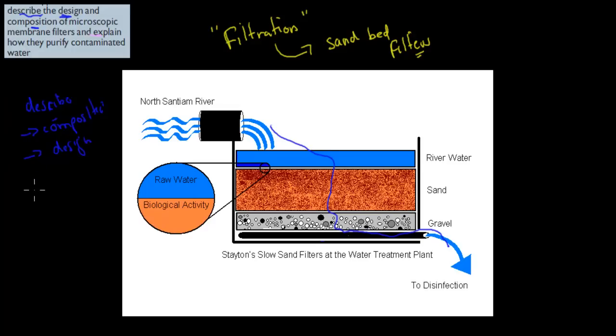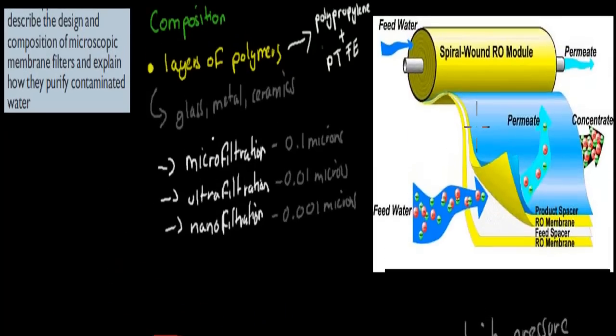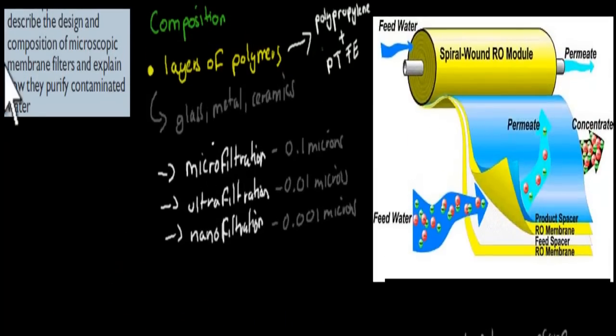So describe the design and composition. Describe means we have to give features of the composition, which means what is it made up of. The composition and the actual design. So how does it look like? How have they put all that, how have they assembled it together? So we have to talk about the composition and design of these membrane filters.